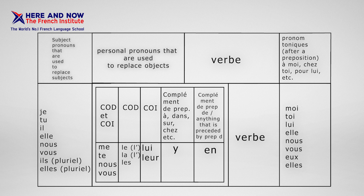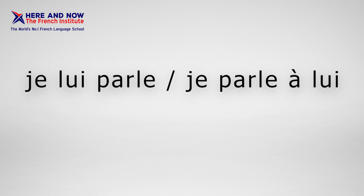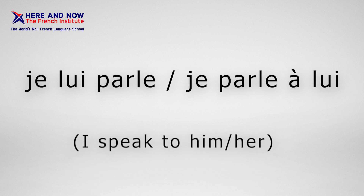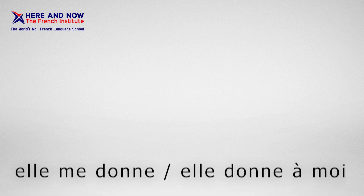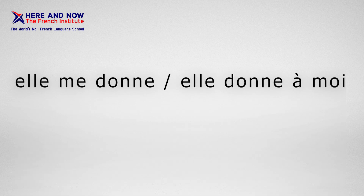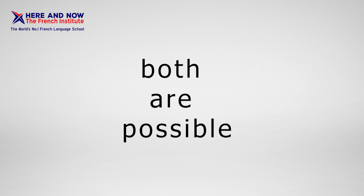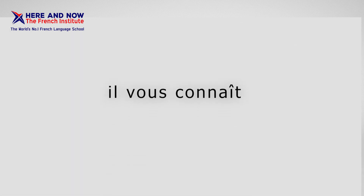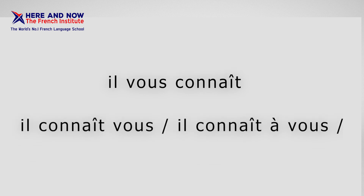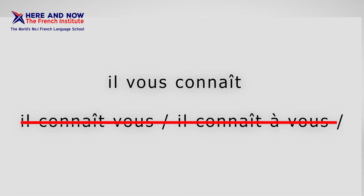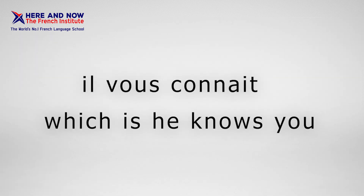The pronom tonique is followed by prepositions like 'à', 'chez', 'pour', etc. For example: 'je lui parle' or 'je parle à lui' — I speak to him or her. 'Elle me donne' or 'elle donne à moi' — she gives me. Both are possible. However, 'il vous connaît' — he knows you — is the only correct form; 'il connaît vous' or 'il connaît à vous' are both wrong.